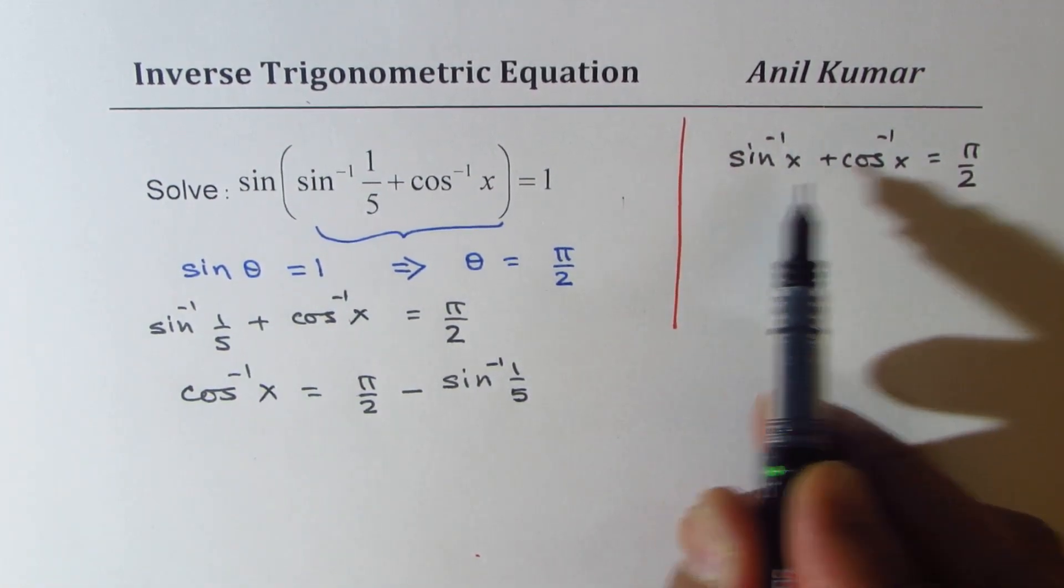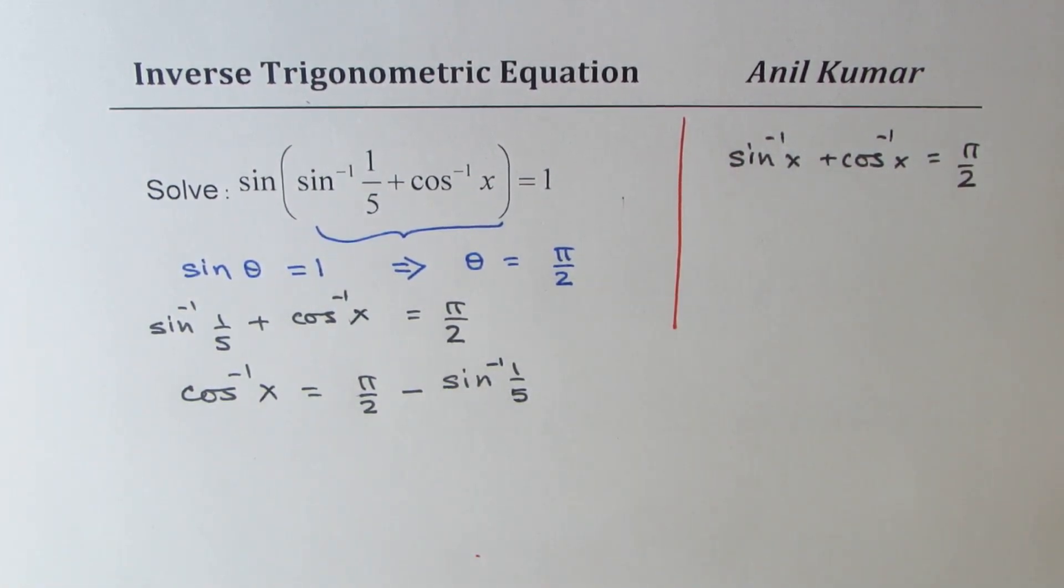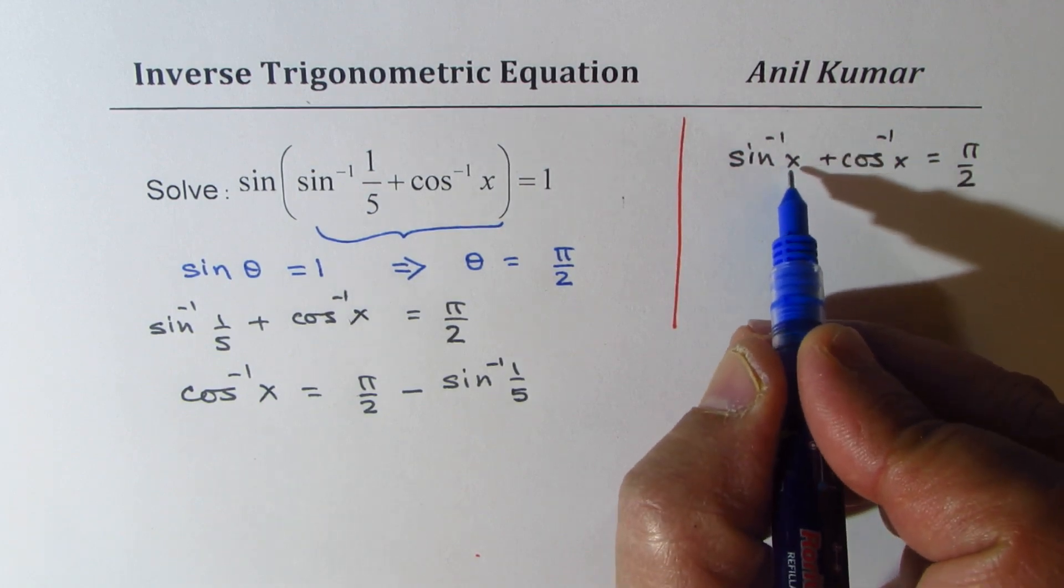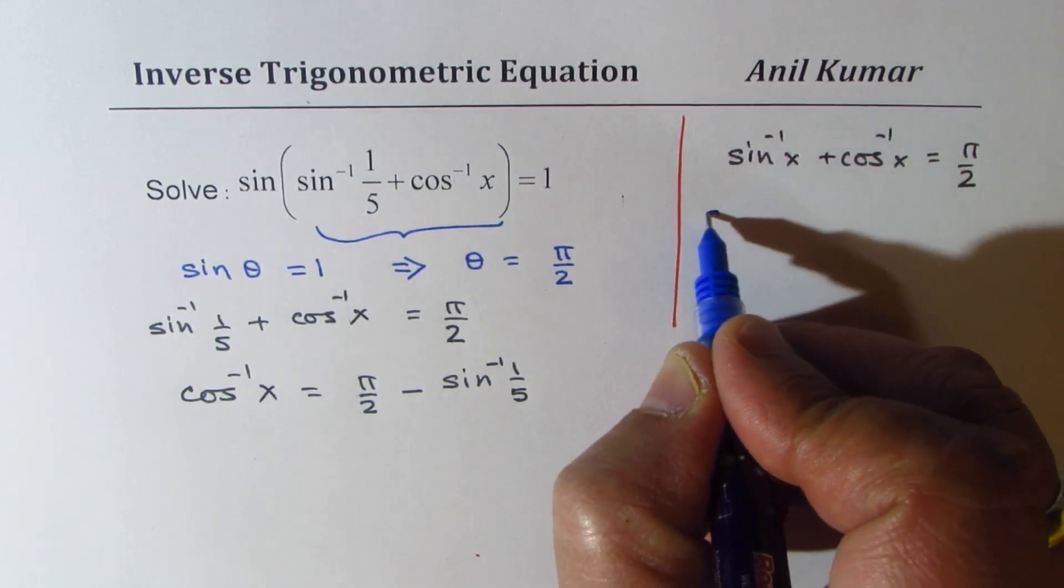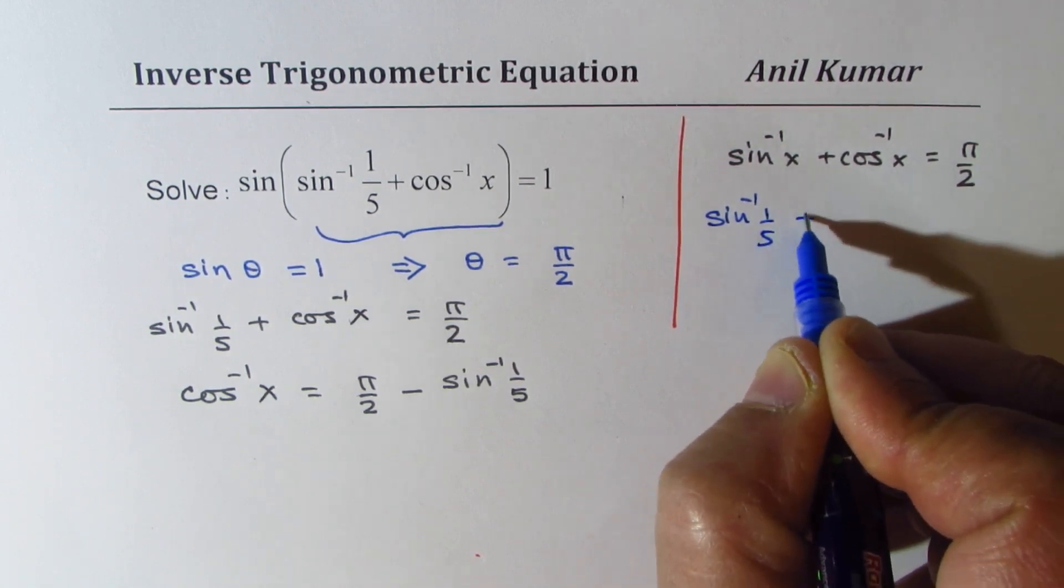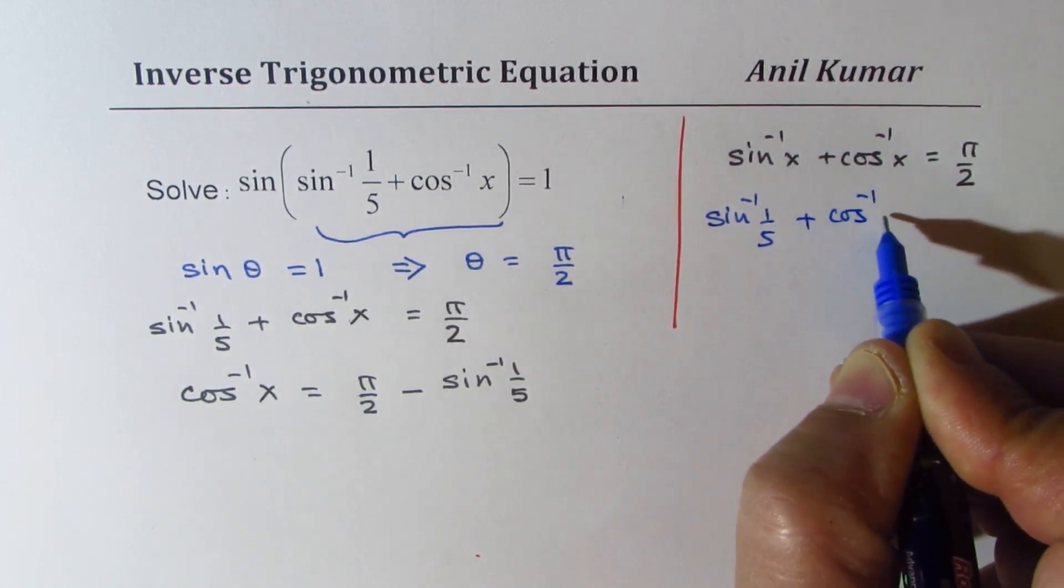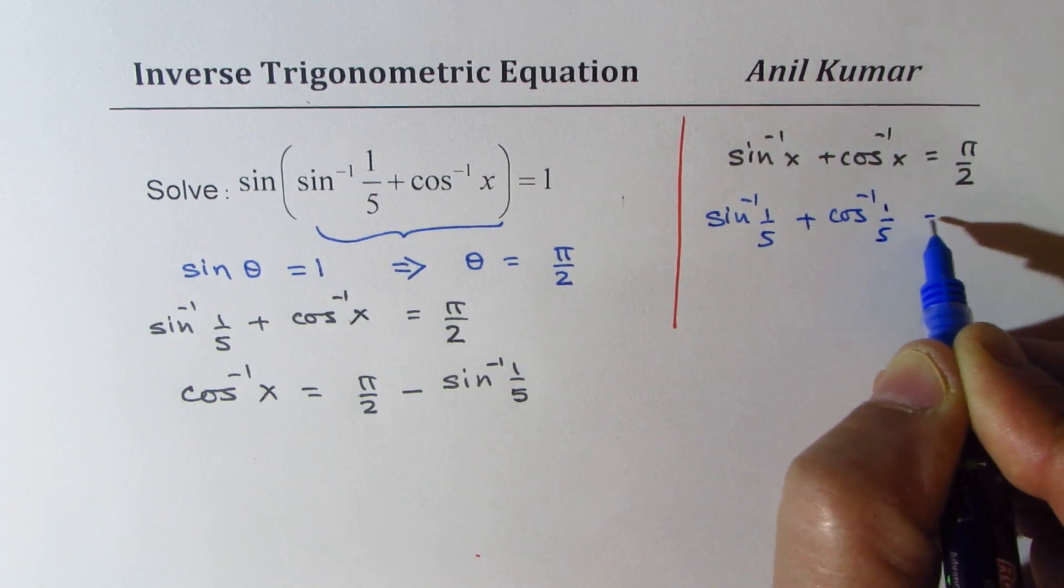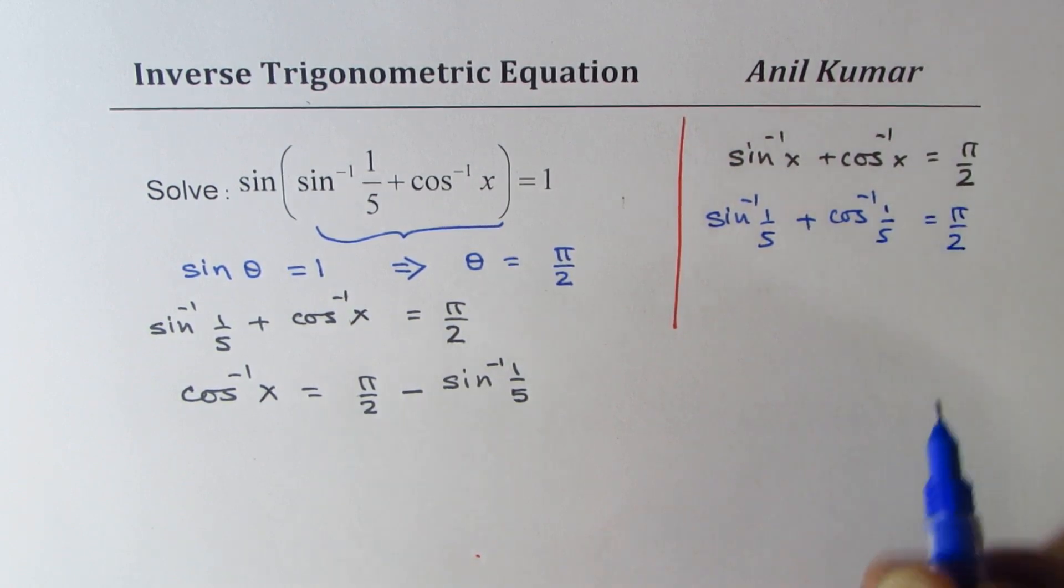Now, in this particular relation, think like this: x could be any value. So we could also write this as sine inverse 1 over 5 plus cos inverse 1 over 5 equal to pi by 2.